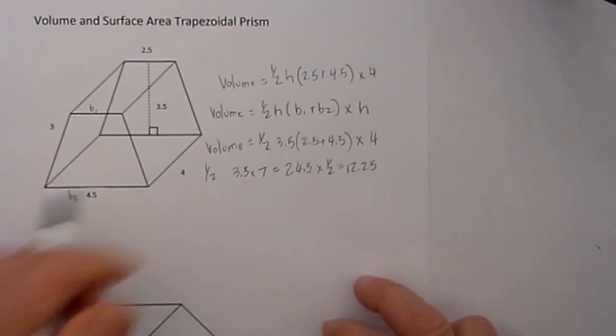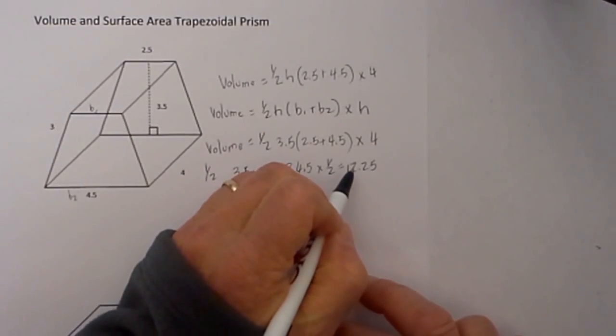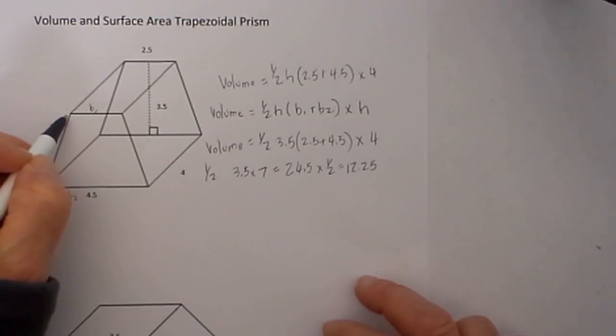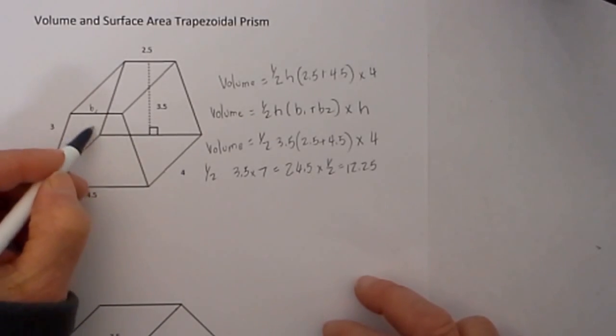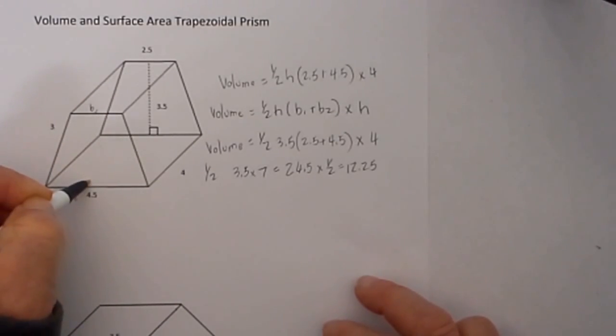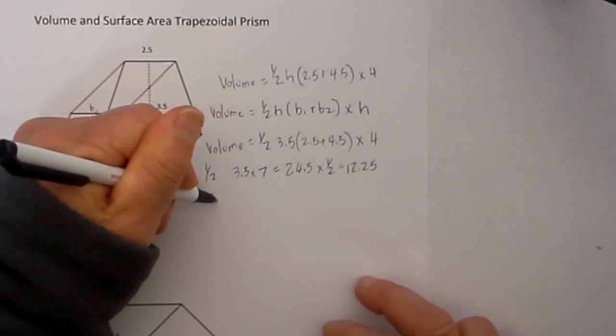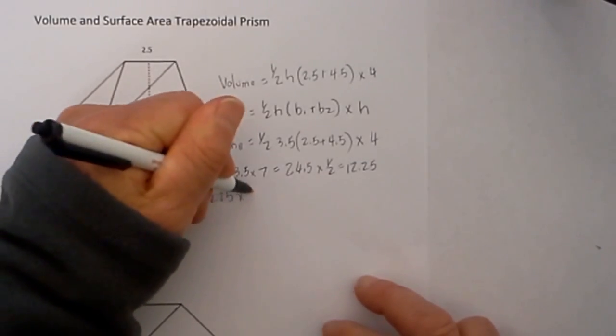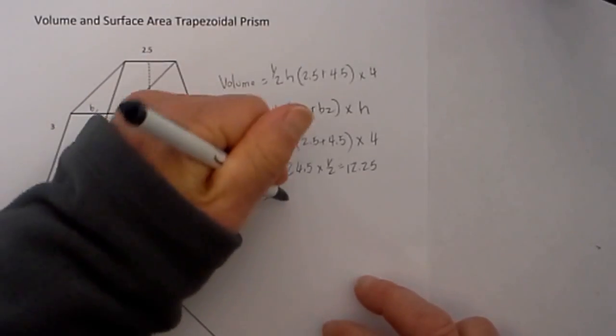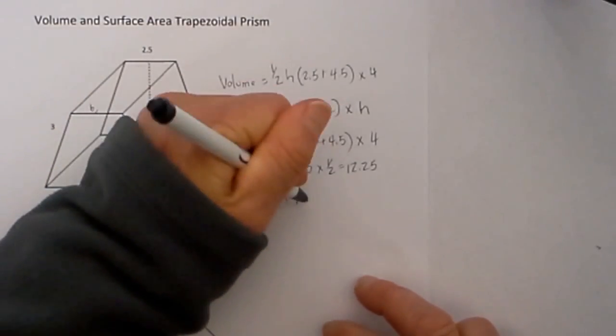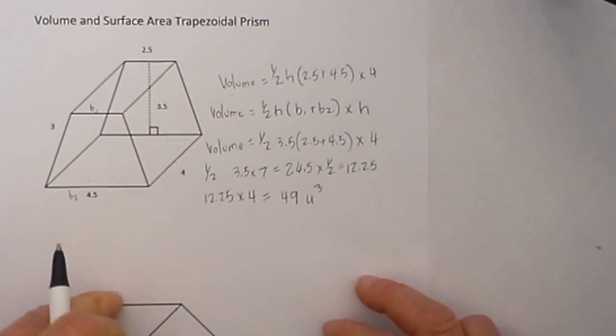But that is not our volume. We now need to multiply that. That gives us the area of the trapezoid base. Now we need to multiply 12.25 times 4, and the 4 represents the height of the prism, and that now gives us the volume, which is 49 units cubed.